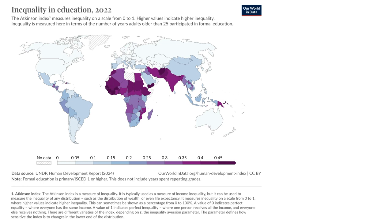Inequality is measured here in terms of the number of years adults older than 25 participated in formal education. Most Asian, South Asian, and African countries appear to be facing higher levels of inequality as far as education is concerned. This compels us to look at the geography and structural characteristics — various social, political, and economic aspects — that may be contributing to inequality in education. This data points to relatively high levels of inequality in education in the global south, particularly in South Asia and Africa.